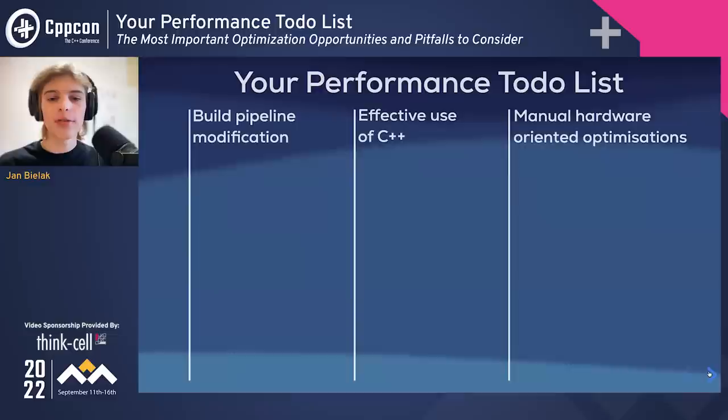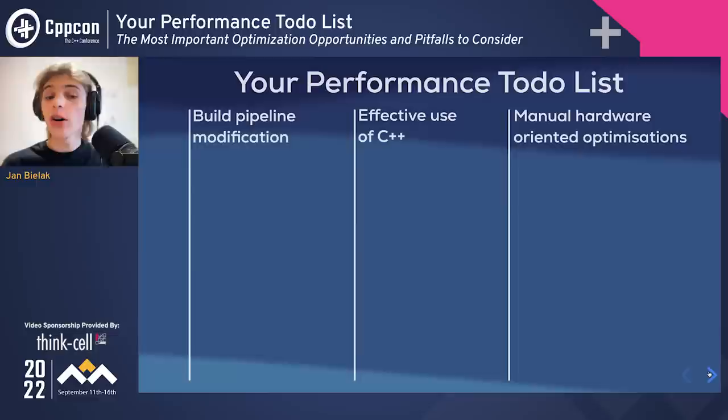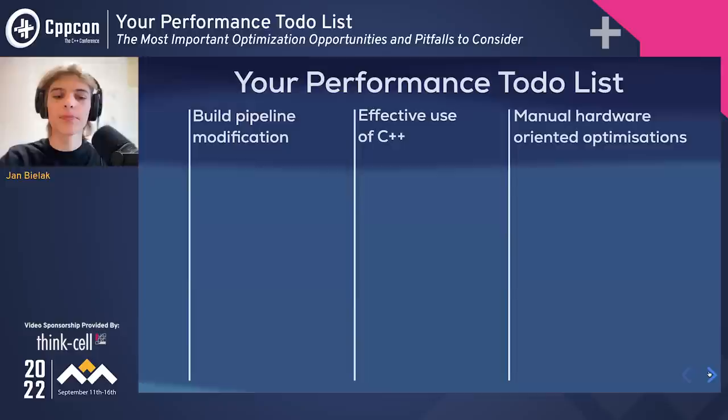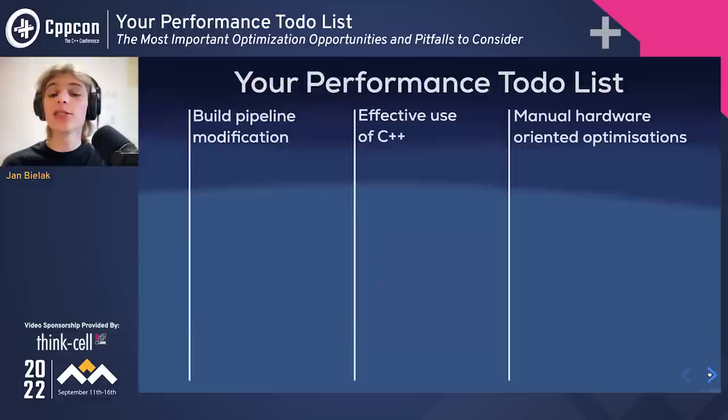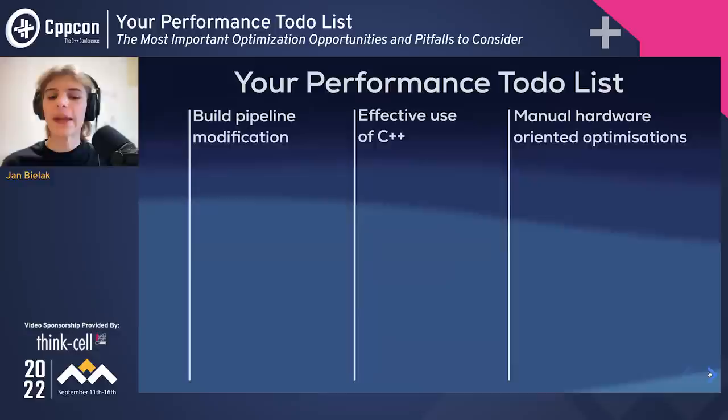These are only optimization opportunities, so they may improve performance, but they also might not. It's recommended to try them out in a development environment, like a new source control branch, and merge them with main code only after benchmarking, profiling, and assessing actual performance differences. As this isn't a talk on measuring performance, I won't delve into details, but do keep in mind that benchmarks come with their own pitfalls. I strongly advise avoiding premature optimization with no profiling.